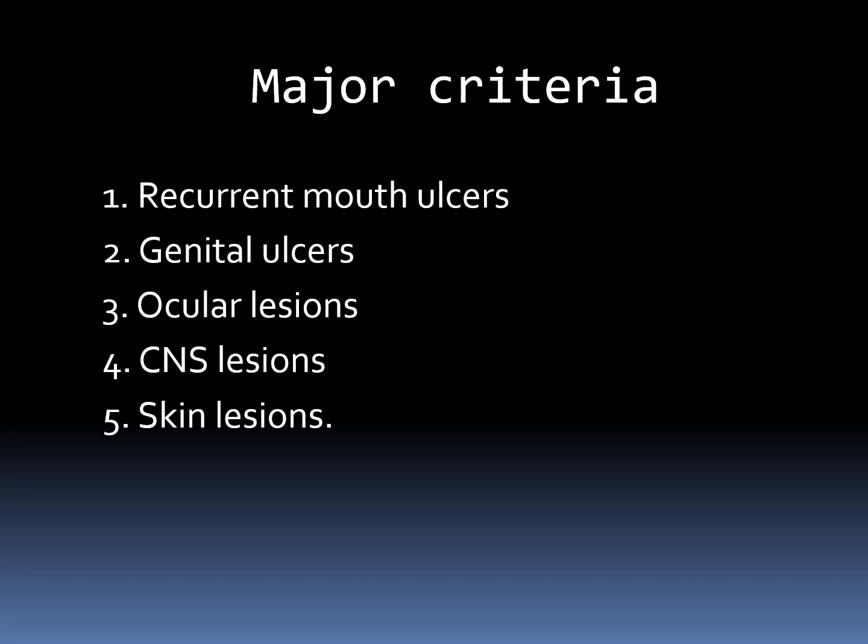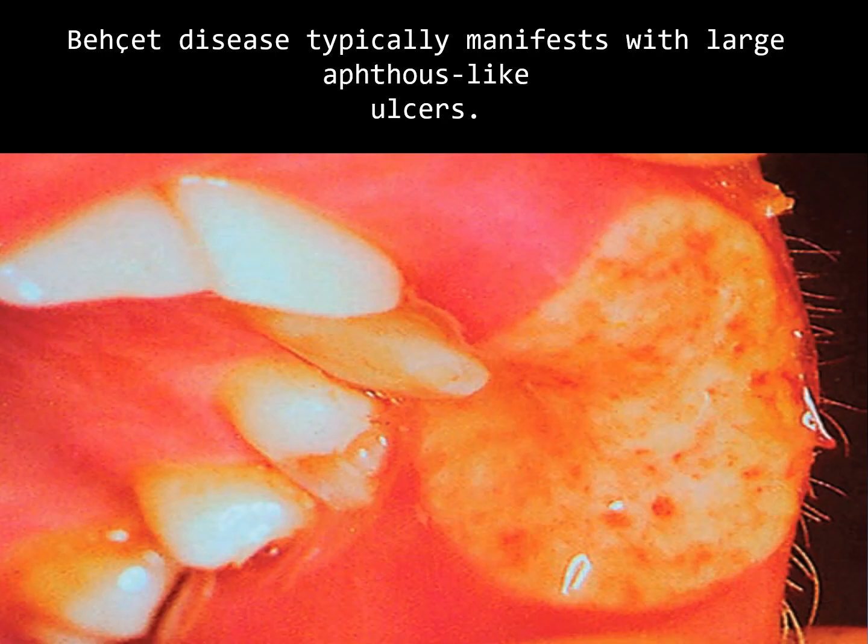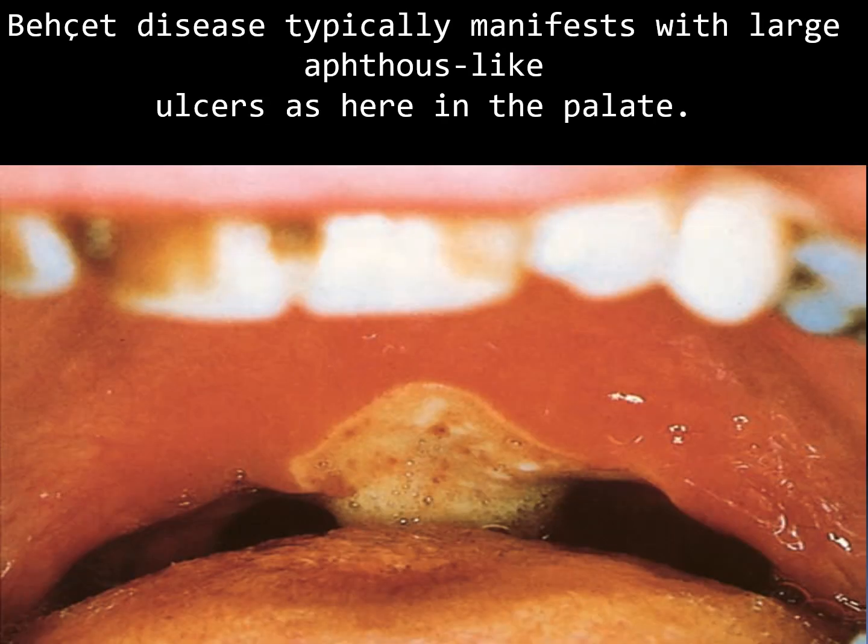Behçet's disease major criteria: 1. recurrent mouth ulcers, 2. genital ulcers, 3. ocular lesions, 4. CNS lesions, 5. skin lesions. Behçet's disease typically manifests with large aphthous-like ulcers.